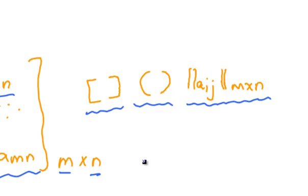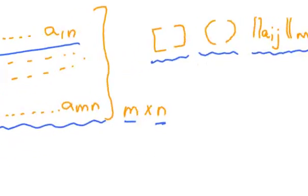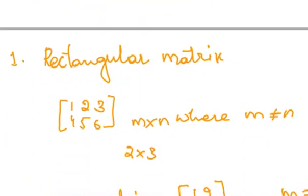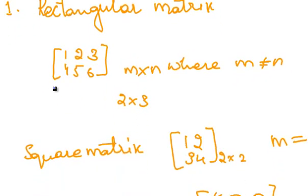Now let's see some of the types of matrices. First, a rectangular matrix. A matrix is said to be a rectangular matrix if the number of rows is not equal to the number of columns. For example, here there are two rows and three columns — this is a rectangular matrix.